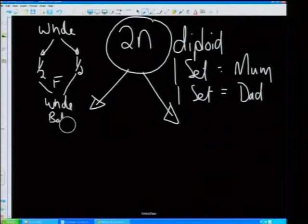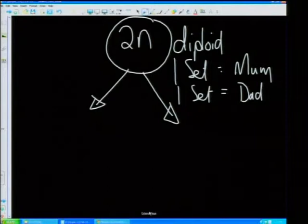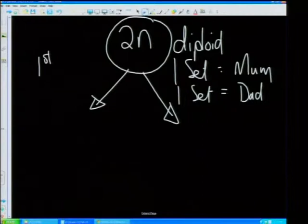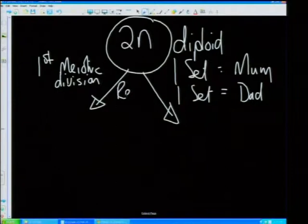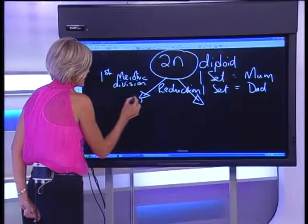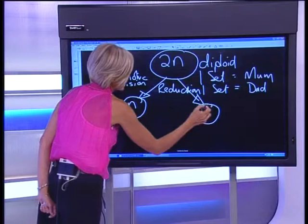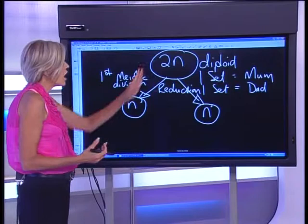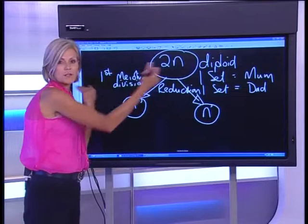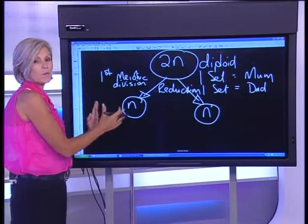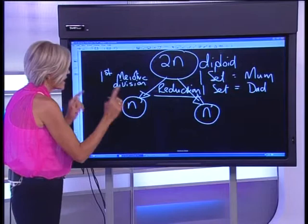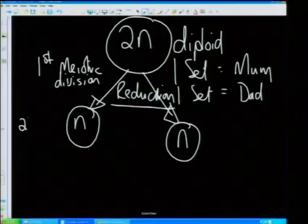We say the diploid cell is going to undergo the first meiotic division, which is called reduction division — because it takes the 2n and divides it into n and n. It literally halves the chromosomes in that cell. One set of the pair goes one side and the other set goes the other side. That's the first meiotic division, and then we have the second meiotic division.